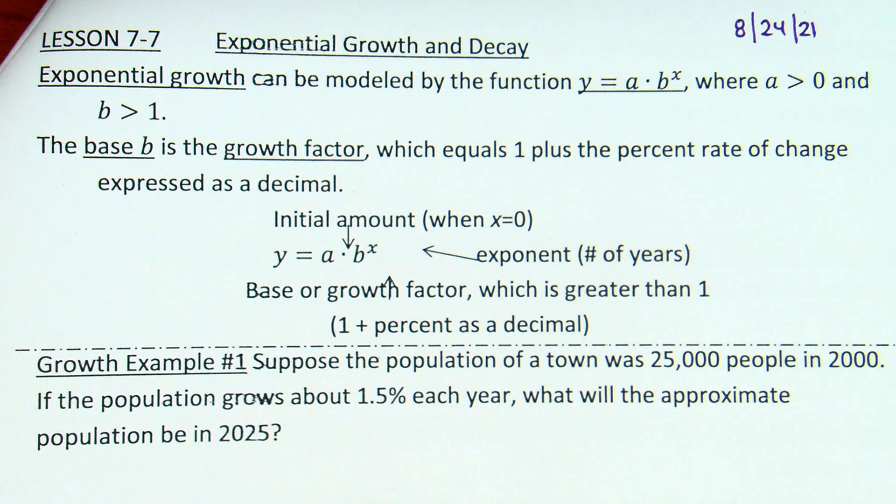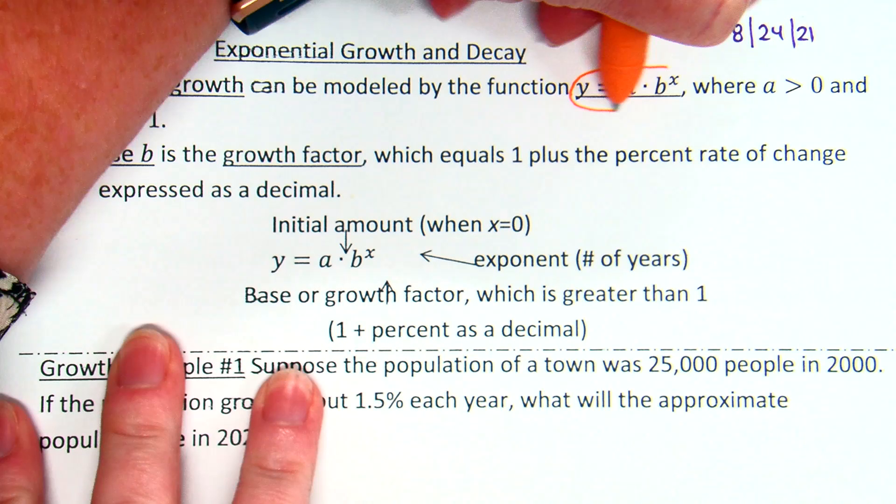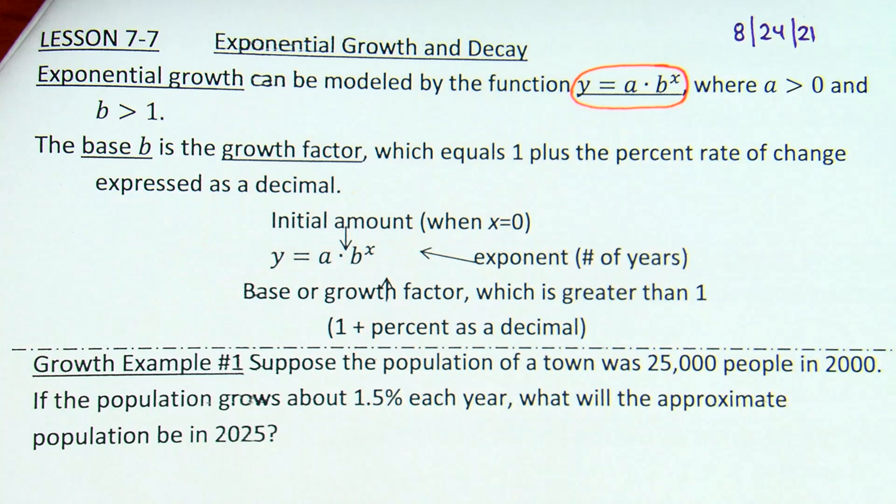Now, there is an equation here. Exponential growth can be modeled by the function y equals a times b to the x. So like we talked about the other day, the x has to be in the exponent for this. A has to be greater than zero, and b has to be greater than one.